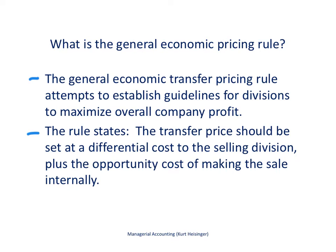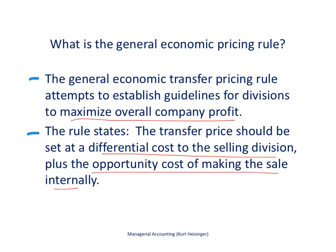The general economic pricing rule provides us with some guidelines to establish transfer pricing between divisions that will not only help the divisions, but also maximize the overall company profit. The rule states that the transfer price should be set at the differential cost to the selling division, plus the opportunity cost of making the sale internally. Let me give you a couple of examples on the next two slides, and I think you'll see how this falls into place.